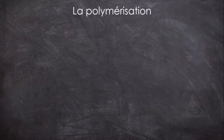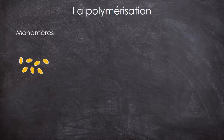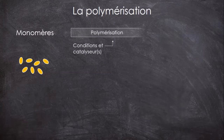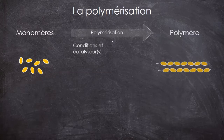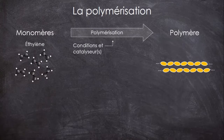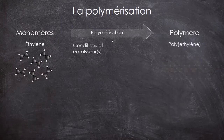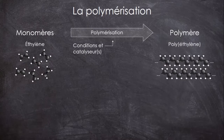De façon générale, c'est le phénomène au cours duquel les monomères, des molécules qui sont capables de réagir entre elles dans les bonnes conditions, s'assemblent pour former une longue chaîne, le polymère. Ici, vu que le monomère c'est l'éthylène, on appelle le polymère synthétisé le polyéthylène.